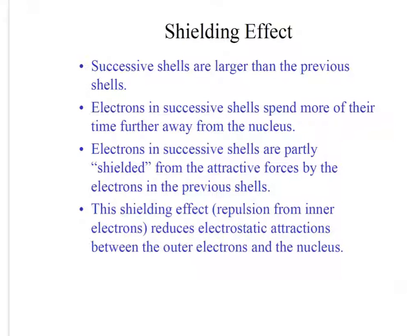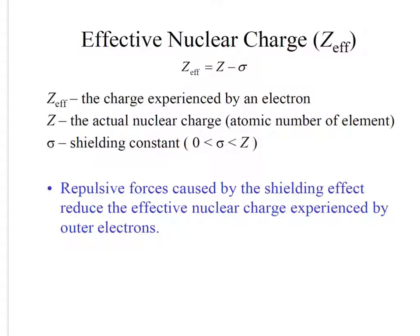The shielding effect. We're going to use the shielding effect to look at periodic properties of elements. As your shells get larger and larger than the previous shells, you have more and more electrons that are shielding your valence electrons from the nucleus. Your effective nuclear charge, or Zeff, is the charge experienced by an electron. Zeff is the number of protons minus the shielding constant. Repulsive forces caused by the shielding effect reduce your nuclear charge, your Zeff, experienced by outer electrons.